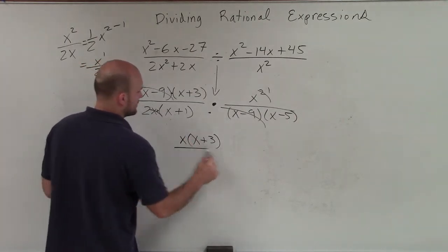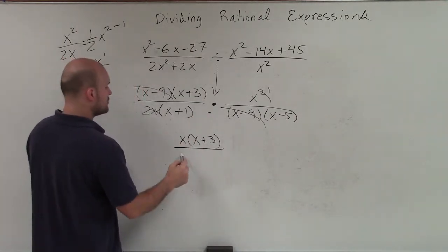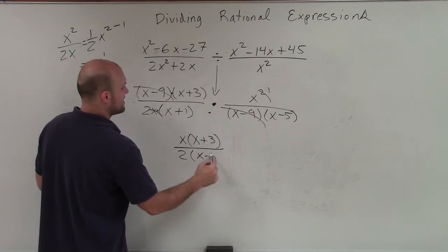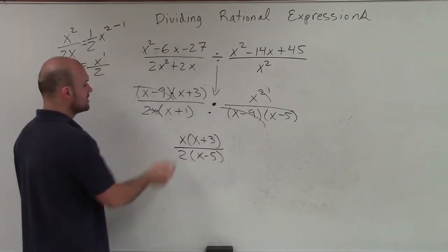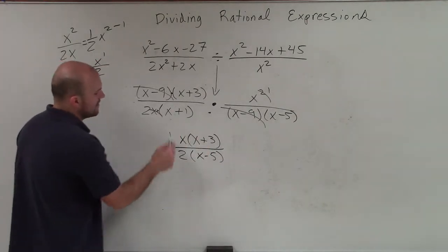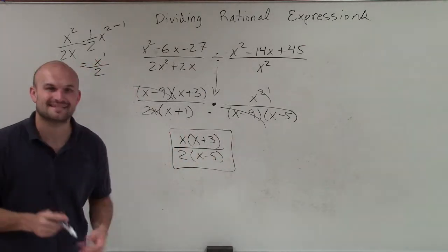And that's going to leave me with an x plus 3 times x in my numerator. I'll write the x in front, divided by a 2 times x minus 5. And since these aren't common terms, we cannot divide it out. That is going to be our simplified answer. Thanks.